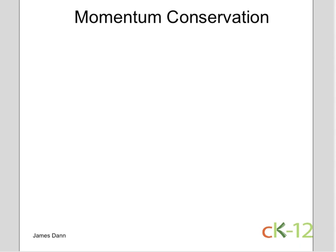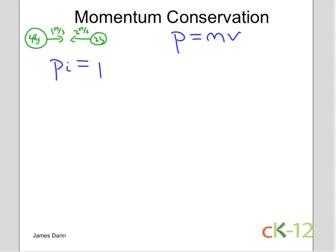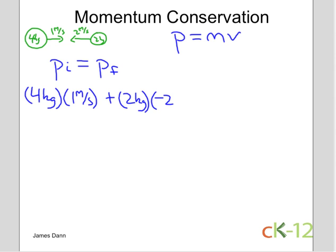Let's use some scratch paper to solve first for momentum conservation. I'll redraw the situation: the four kilogram ball going at one meter per second, and the two kilogram ball going at two meters per second. Momentum gets the symbol p and is equal to mass times velocity. Velocity is a vector, so momentum is a vector.